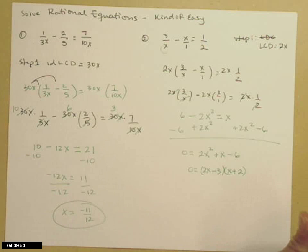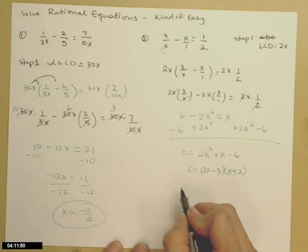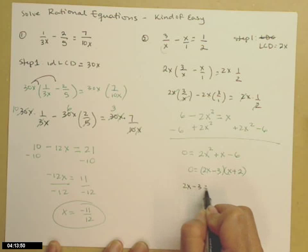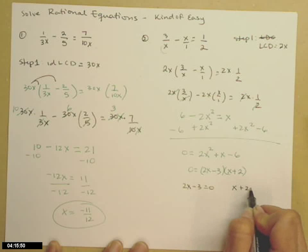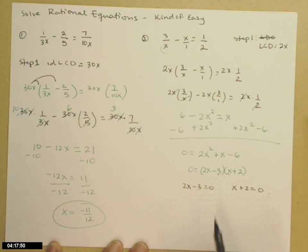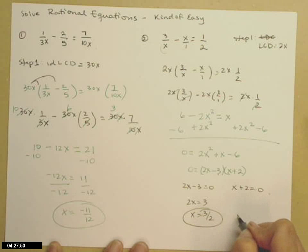So this is a great place to be. I have a multiplication problem that equals 0. The only way that happens is one of those factors has to be 0. So either 2x minus 3 is 0 or x plus 2 is 0. Solving each of those for x gives me 3 halves as one answer and minus 2 as the other answer.